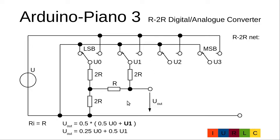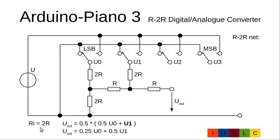Now we add the next stage. We have a voltage source with internal resistance 2R, and a second voltage source connected via a 2R resistor to the first. The middle point is fed out and we apply our formula: Uout = 0.5 times (first voltage source voltage plus second voltage source voltage). Multiplying this out gives Uout = 0.25·U0 plus 0.5·U1, and the internal resistance is R. Adding the series resistance makes the internal resistance 2R.